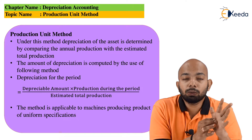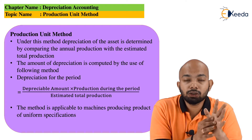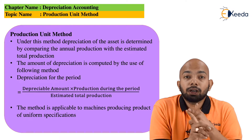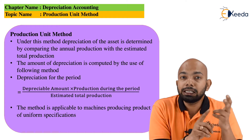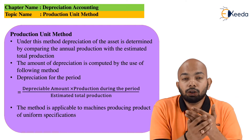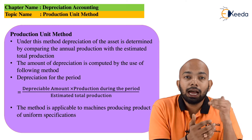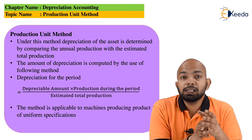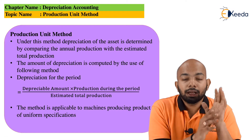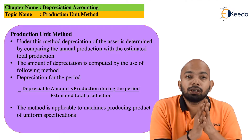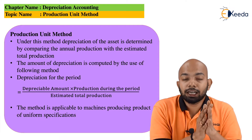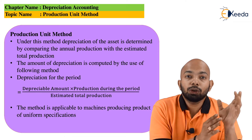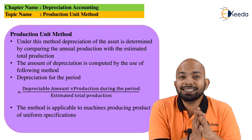When we speak about the Production Unit Method, the total number of units the machine can produce in its complete useful life is the denominator, and the per-year production of that specific machine is the numerator. The other detail required is original cost minus scrap value.